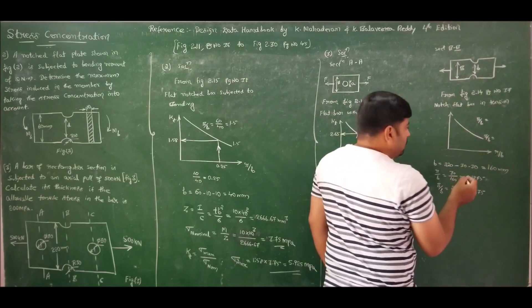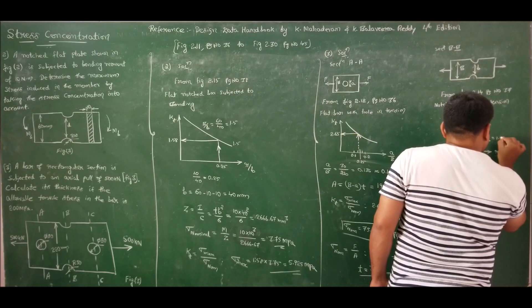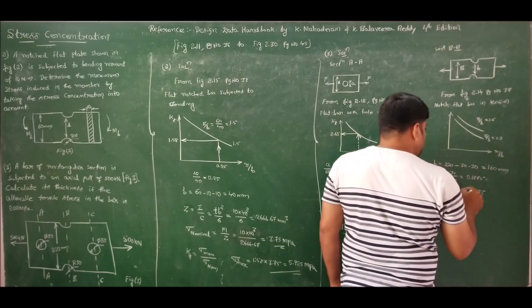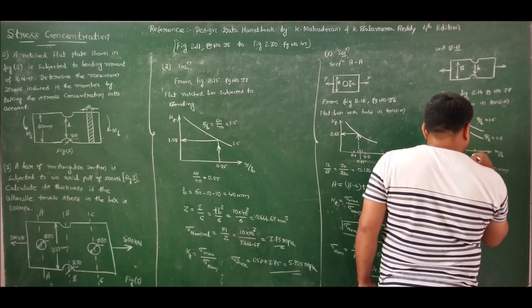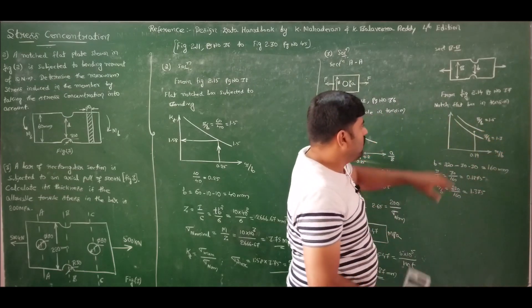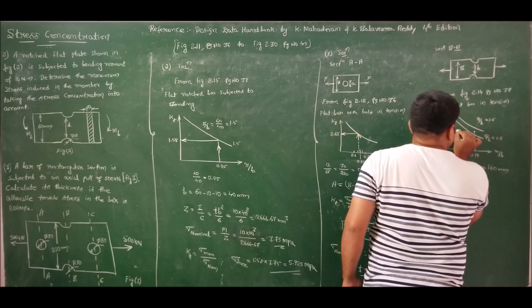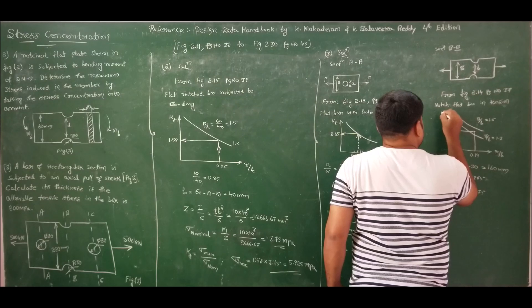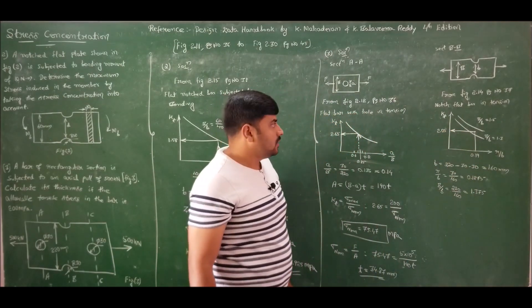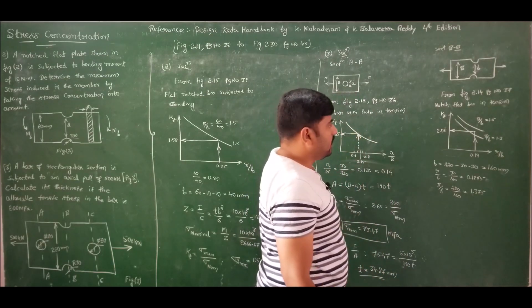Plotting in Figure 2.14, page 37: curves exist for B/b = 1.3 and B/b = 1.5. With r/b ≈ 0.19, moving up to intersect between the 1.3 and 1.5 curves (interpolating at B/b = 1.375 ≈ 1.4), then coming horizontally left, the stress concentration factor Kt = 2.05.